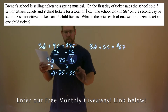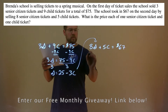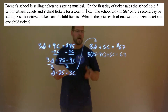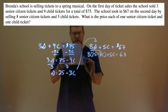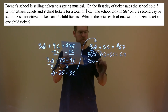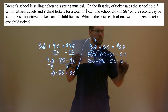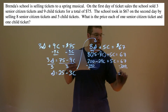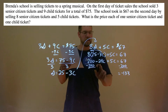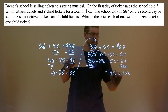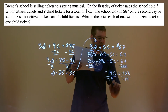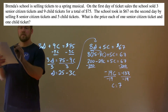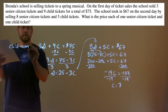We then take that information and plug it in for S. So we have 8 times S — we write 25 minus 3C — plus 5C equals 67. Now we have one variable and we can solve for C. Distribute the 8: 8 times 25 is 200, 8 times negative 3C is negative 24C. Plus 5C equals 67. We subtract 200 from both sides: 67 minus 200 is negative 133. Negative 24C plus 5C is negative 19C. Divide both sides by negative 19, and C equals negative 133 divided by negative 19, which becomes positive 7. So a child ticket costs $7.